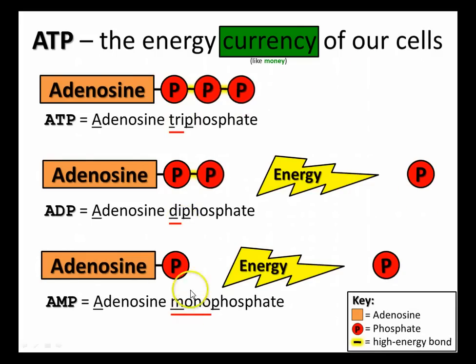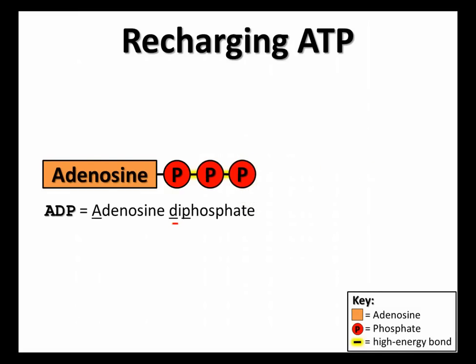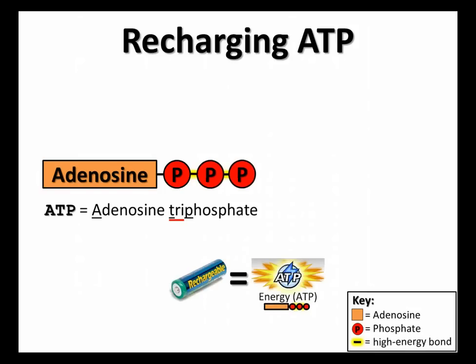Tri means three, di means two, mono means one. So ATP releases energy and becomes ADP, releases energy and becomes AMP. ATP is kind of like a rechargeable battery — it gives off energy when you need it, but you can recharge it. Here's my ADP, the one that's discharged, and there's that phosphate. It is possible to add in energy and squish that thing back on there, create that high energy bond, and it goes from ADP back to ATP. It gives off energy, but you can store energy back in there.